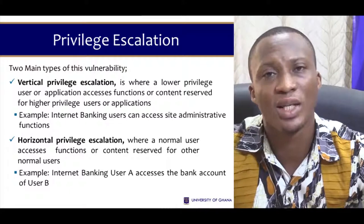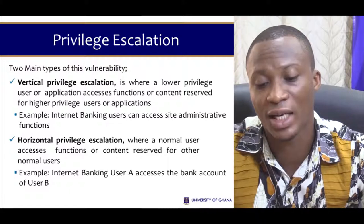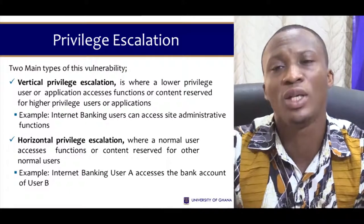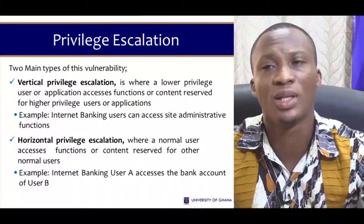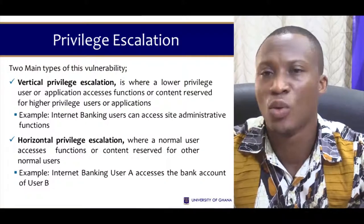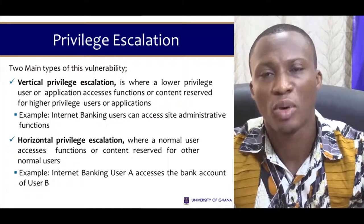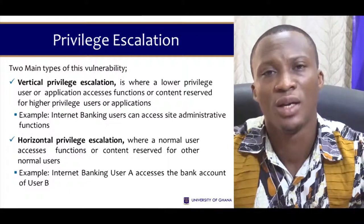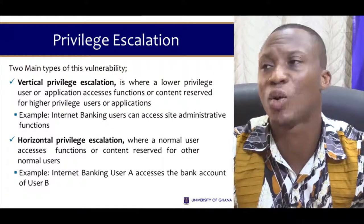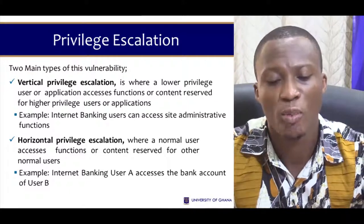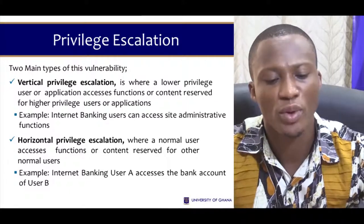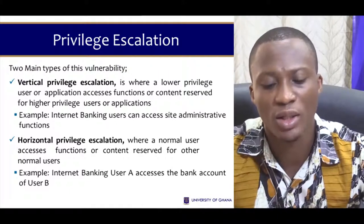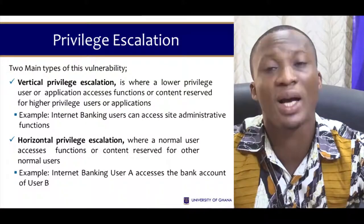The next vulnerability is horizontal privilege escalation. Here, a normal user is able to access a colleague's or fellow normal user's accounts or functions. For example, we may both be tellers with the same credential level. If I'm able to use my credential to access the content of your page, that is horizontal privilege escalation. An example is internet banking user A accessing the bank account of user B.